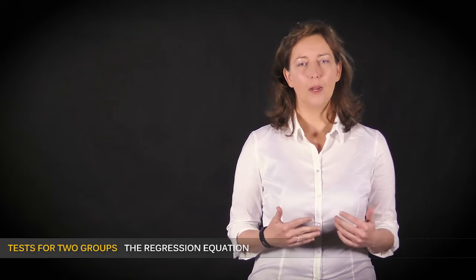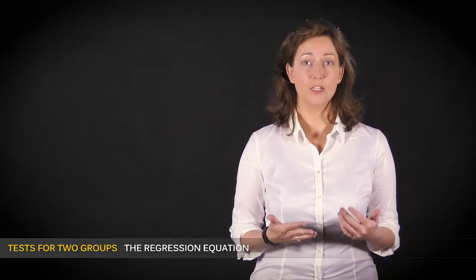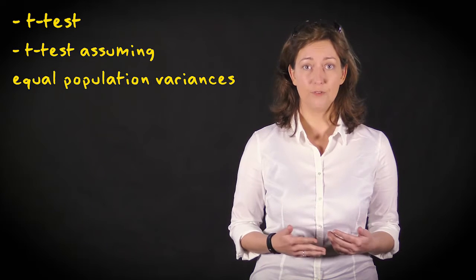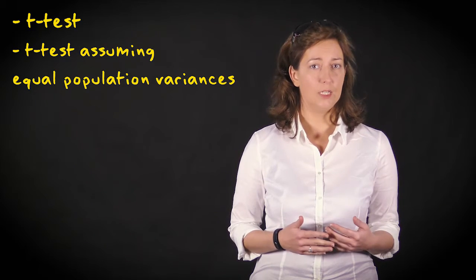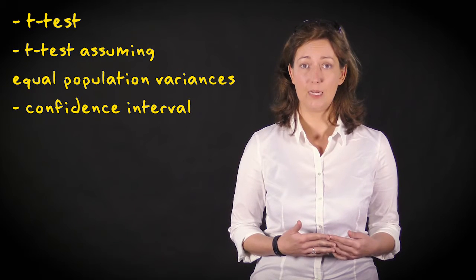In this video, we'll discuss how to compare two independent groups on a quantitative variable using a t-test for two independent means. We'll consider a version of this test that adds the assumption of equality of population variances, and we'll also see how to calculate a confidence interval comparing two independent means.